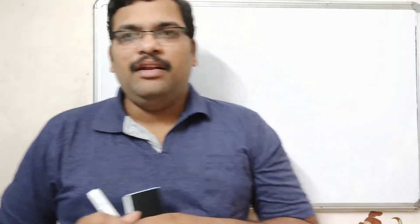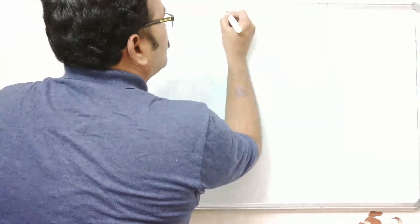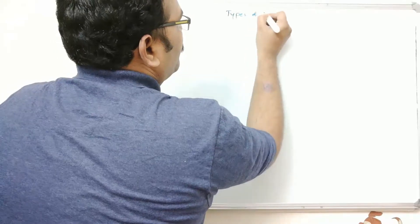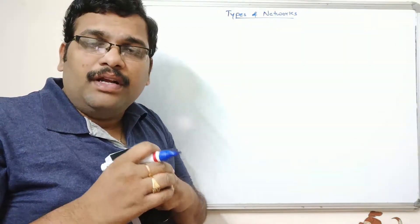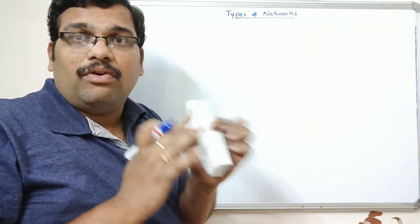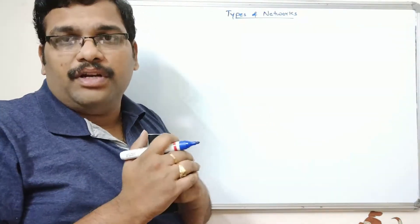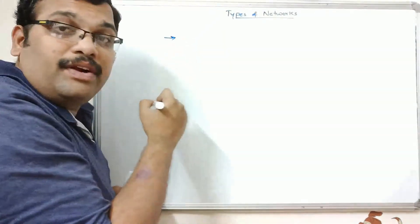Hello friends, welcome back to our channel. In the previous session we saw the introduction to computer networks. Today we'll go with another concept, that is types of networks. The definition of a network is a collection or connection of several computers, and there are majorly three types of networks.